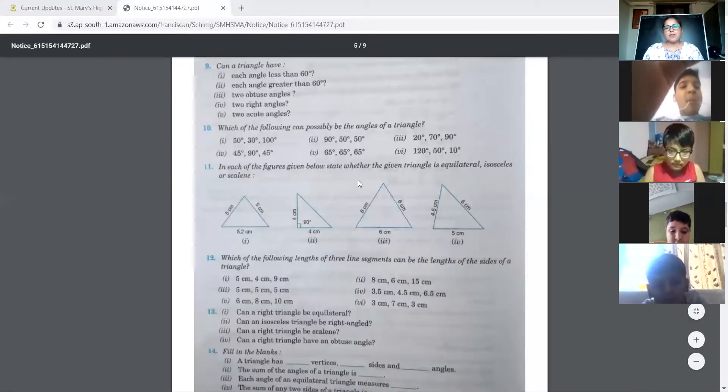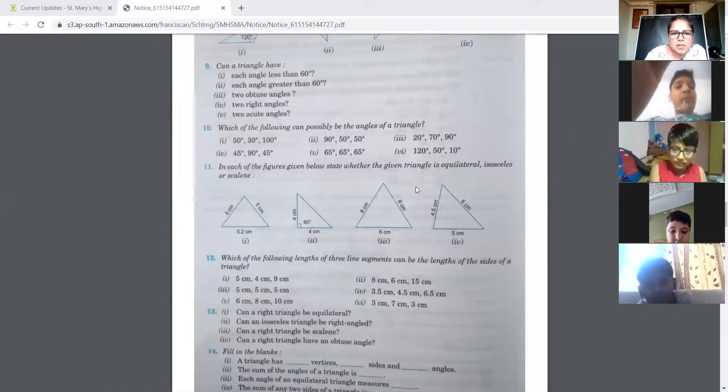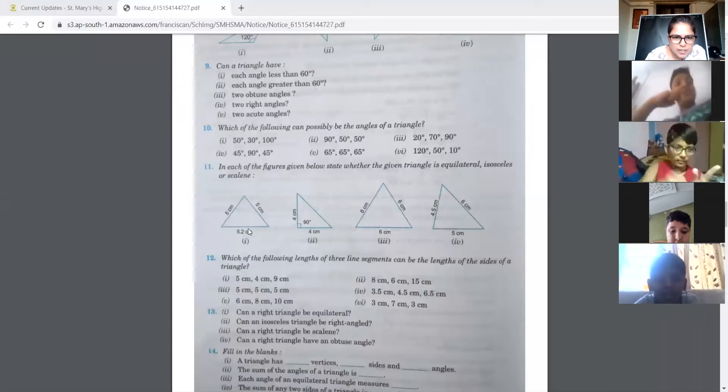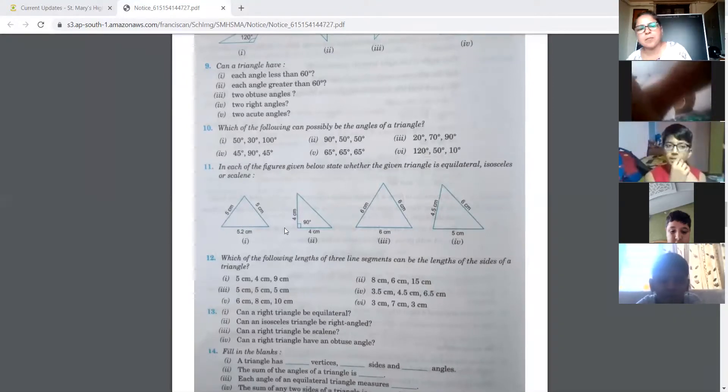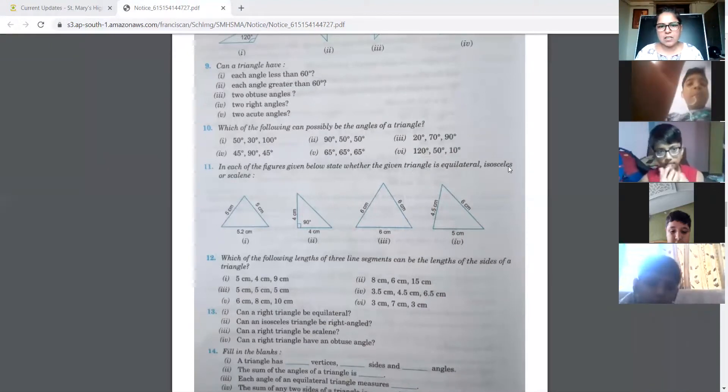So in question 11, we have to tell which type of triangle it is. The first one has all the sides different. No, two sides are the same and one is different, meaning it is an isosceles triangle.